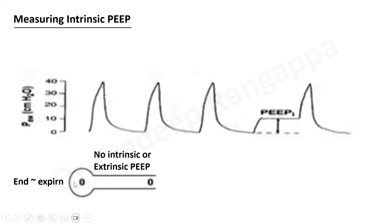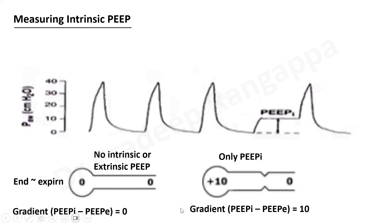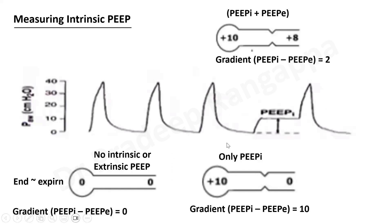Our whole problem is with expiration. At end-expiration, if there is no intrinsic PEEP and no extrinsic PEEP, the gradient is zero, meaning there is no problem with air going in and coming out. But if you have only an intrinsic PEEP of 10 with extrinsic PEEP of zero, the gradient is high — which may not be ideal for smooth expulsion of gases from the alveoli. If intrinsic PEEP is 10 and extrinsic PEEP is 8, the gradient becomes 2, which may be the ideal situation where gases enter and exit easily. It is the gradient that is important for smooth gas flow.